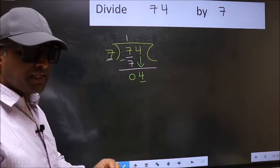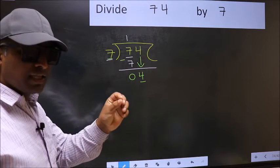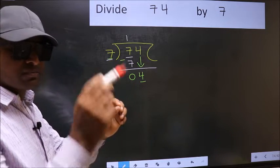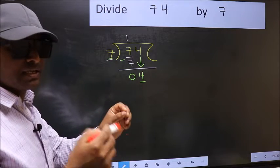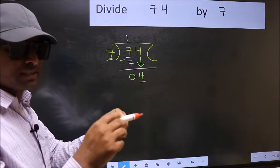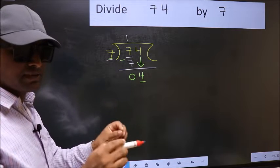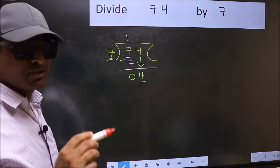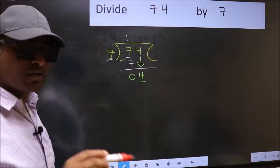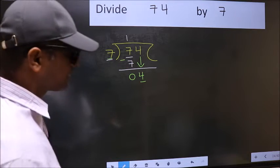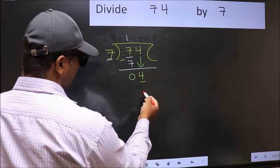Bringing the number down and putting dot and taking 0 in the same step — you should not do that. Instead, what you should think of doing is: what number should we write here in the quotient?